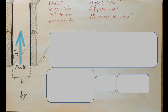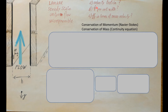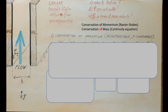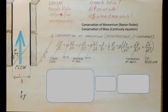To find the velocity profile we need to solve the conservation of momentum — Navier-Stokes — and we'll call on the conservation of mass (continuity equation) to help cancel some terms. From our setup we can see that we have a one-dimensional flow going in the y-direction.